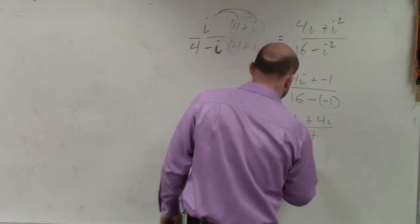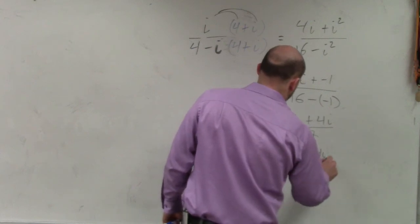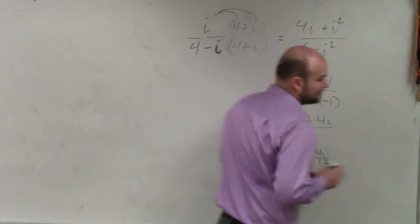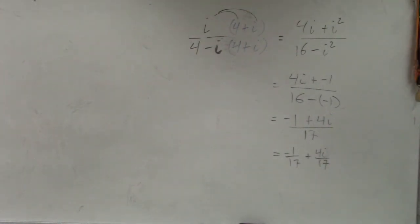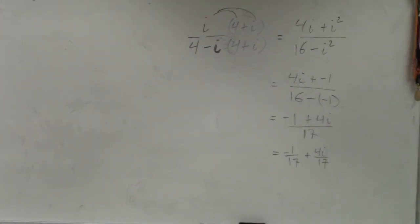So my final answer is negative 1 over 17 plus 4i over 17. That would be your final answer.